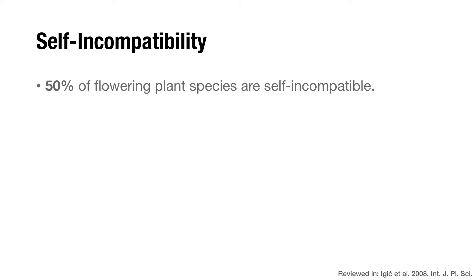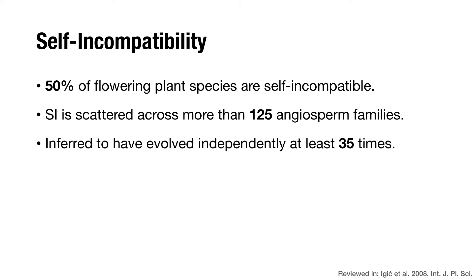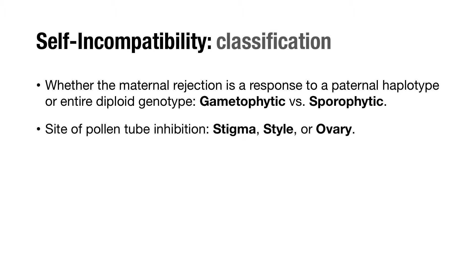Self-incompatibility is thought to occur in about one half of all flowering plant species, from more than 125 families. It's widely distributed and it comes in many flavors. In most species, pollen recognition depends on the match between the maternal genotype, expressed in a diploid pistil, and the paternal haplotype. These systems are known as gametophytic. In others, recognition depends on the paternal genotype instead. These systems are known as sporophytic. In addition, the distance that the pollen tube travels through the style before inhibition occurs can be a tip about the underlying mechanism, with GSI generally occurring in the style and SSI on a stigmatic surface.